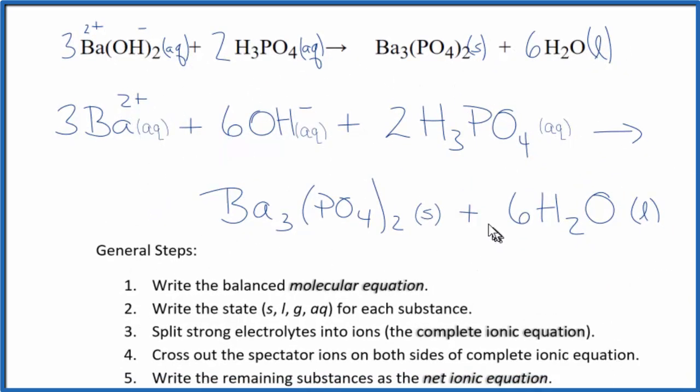And this is the net ionic equation for barium hydroxide plus phosphoric acid. We have the same number of each type of atoms on each side. So that's balanced. And then for the charge, that's balanced as well. We have 3 times 2 plus, that's 6 plus. 6 times 1 minus, 6 minus. So those balance out. Everything on this side is neutral.